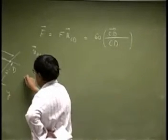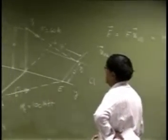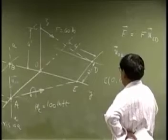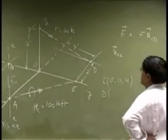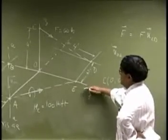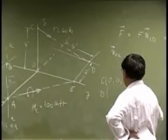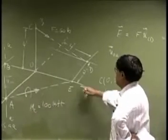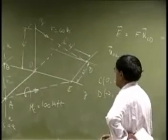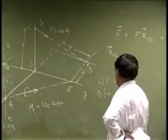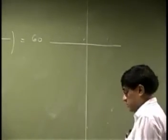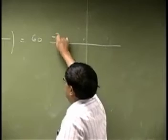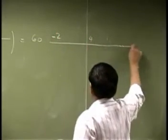We look for the coordinates. The coordinate of point C is on the Z axis, so you get 0, 0, and 4. Then we look for the coordinates of D — it is on the X-Y plane, so Z goes to 0, and then you have negative 2 in that direction and 4 on the Y direction. So D is negative 2, 4, and 0.